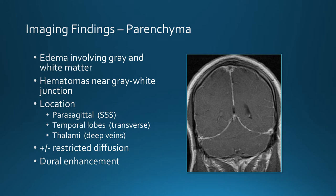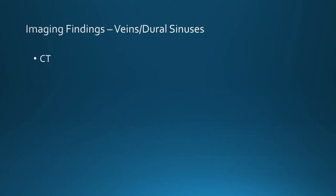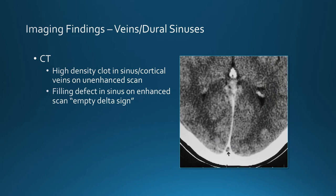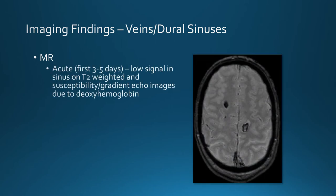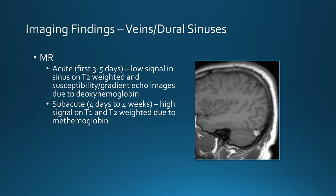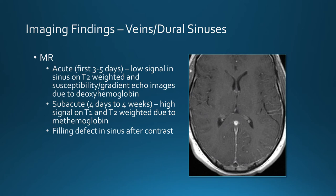We often see dural enhancement. On CT, if the thrombosis is acute, we can see high-density clot in the dural sinuses or cortical veins on non-contrast CT, and a filling defect on contrast CT — the so-called empty delta sign. On MR, for acute thrombosis in the first few days, we see low signal in the sinus on T2 and gradient echo images due to deoxyhemoglobin. In the subacute phase — after a few days, lasting several weeks — we see high signal on T1-weighted images from methemoglobin. After contrast, we may see a filling defect within the sinus.